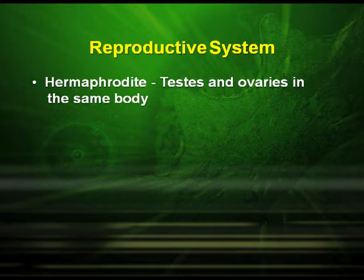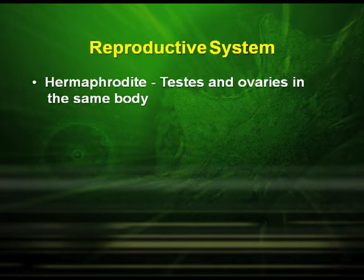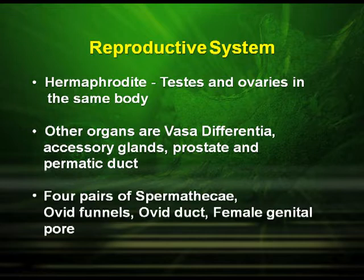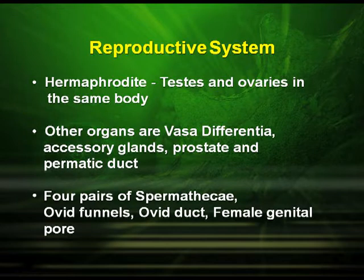Earthworms are hermaphrodite animals — the testes and ovaries are found in the same body. The other organs of the reproductive system are the vas deferentia, the accessory glands, the prostate and spermatic duct, four pairs of spermathecae, oviducal funnels, oviduct, and the female genital pore.